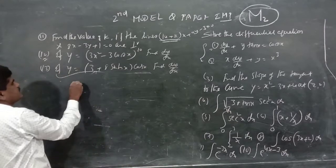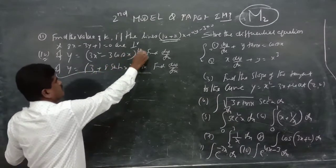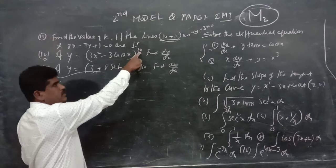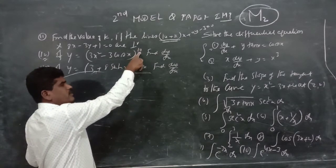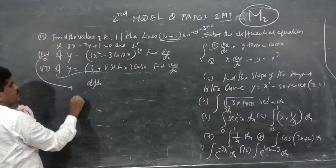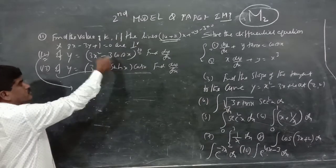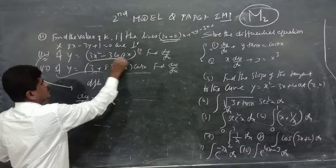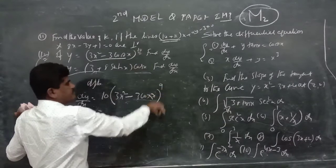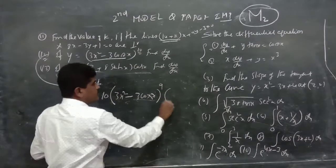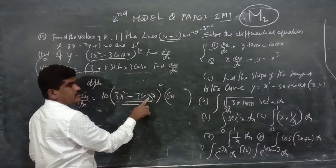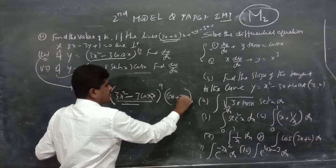Twelfth problem: y equals (3x² minus 3cos x)^10. Differentiate with respect to x using the chain rule: dy/dx equals 10 times (3x² minus 3cos x)^9 times the derivative of the inner function. The derivative of 3x² is 6x, and the derivative of minus 3cos x is plus 3sin x.